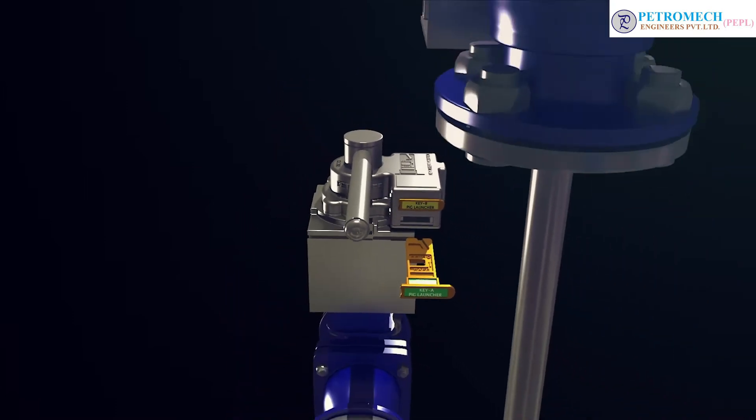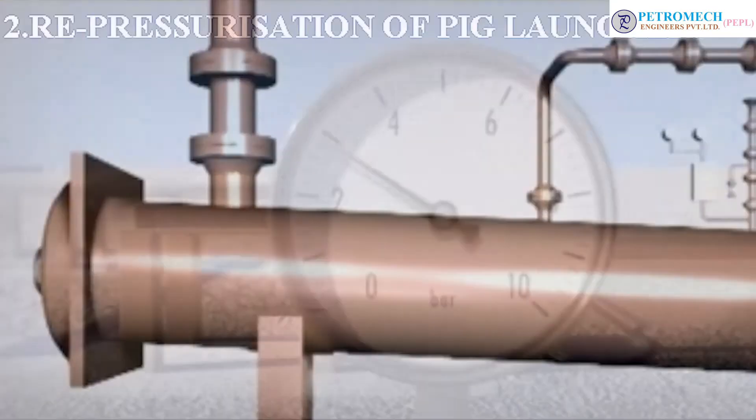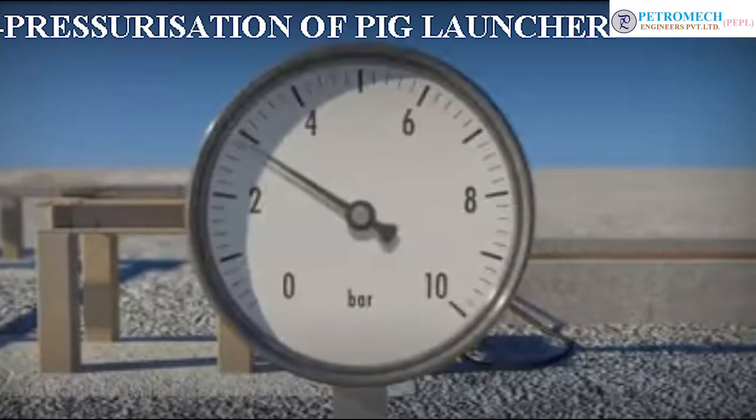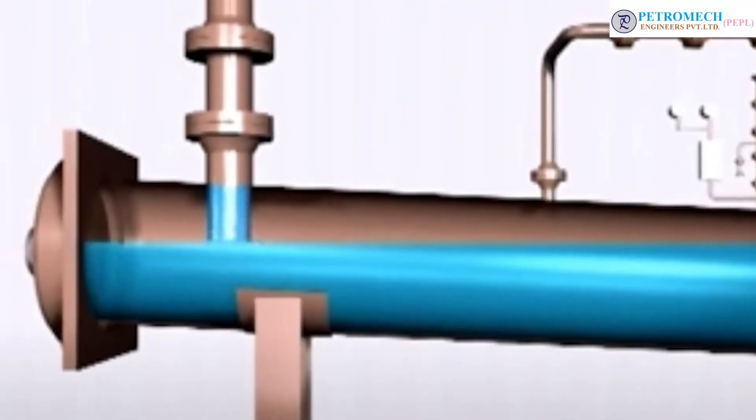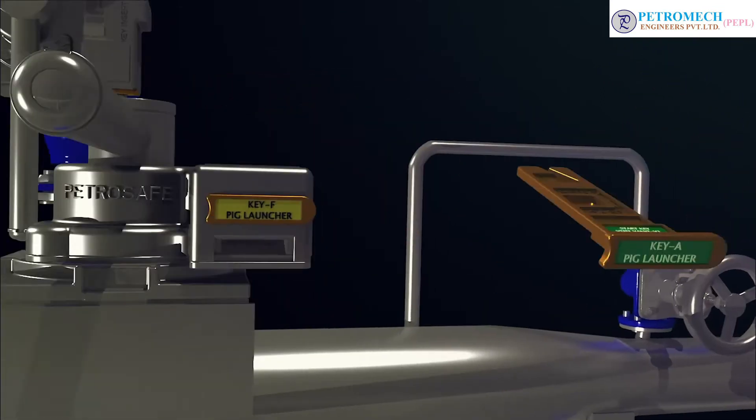Now the pig launcher is ready for repressurizing and launching the pig. Repressurization of pig launcher: Open balancing valve BL1. Insert key A into kicker valve K1.